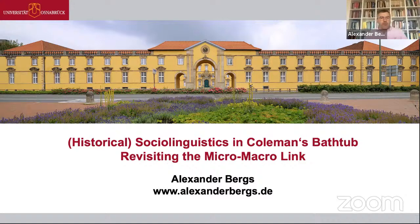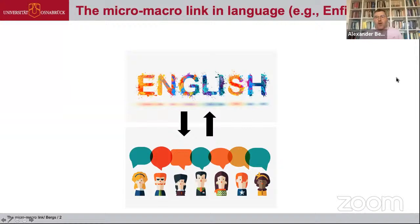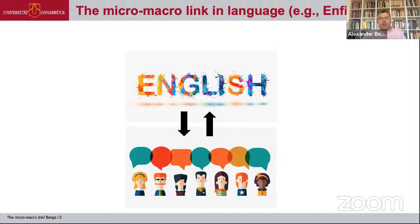The micro-macro link is actually a very old problem in linguistics, and it's very simple. The question is how do the individual language users — the speakers — relate to what we call the language? What about the single speakers of English? How do they relate to what we then call English, or French, or whatever? The micro level refers to individual speakers, and the macro level refers to the languages themselves. The big question is how does the micro feed into the macro, and how does the macro in turn influence the micro level?